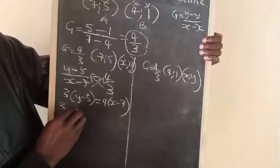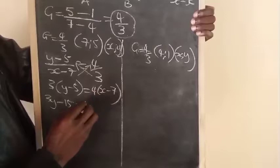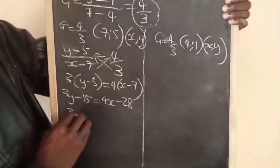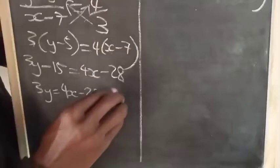We get 3y minus 5 equals 4x minus 7. 3 times y, 3y minus 15. 3 times y minus 5 is 3y minus 15, equals 4 times x, which is 4x, minus 28. Then,